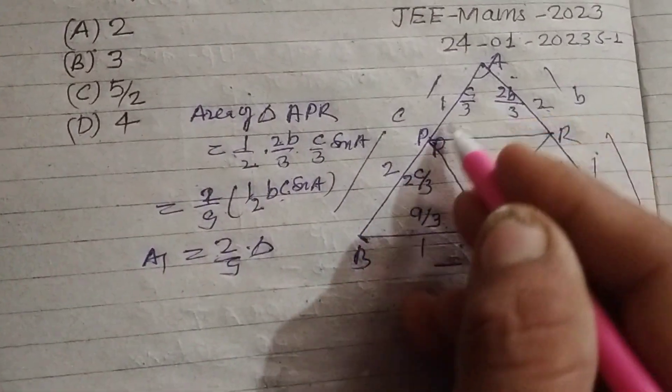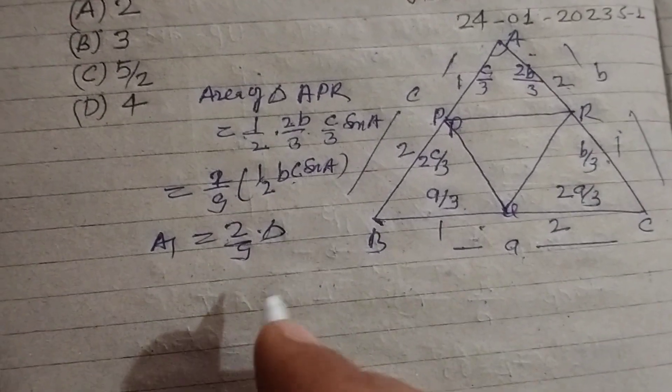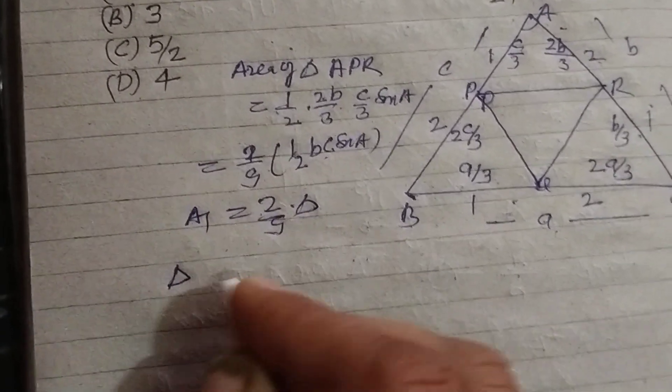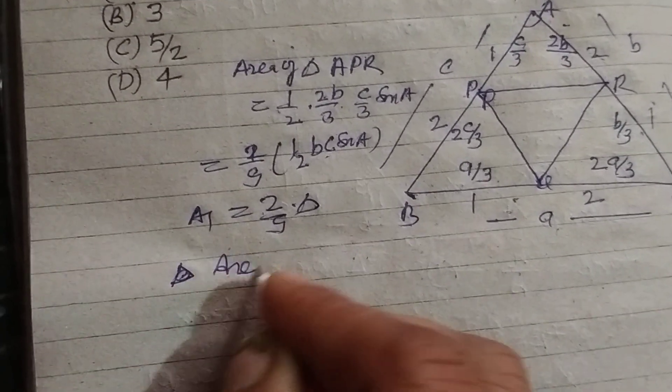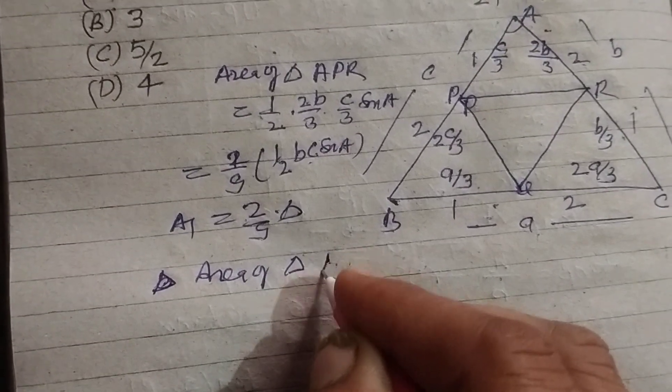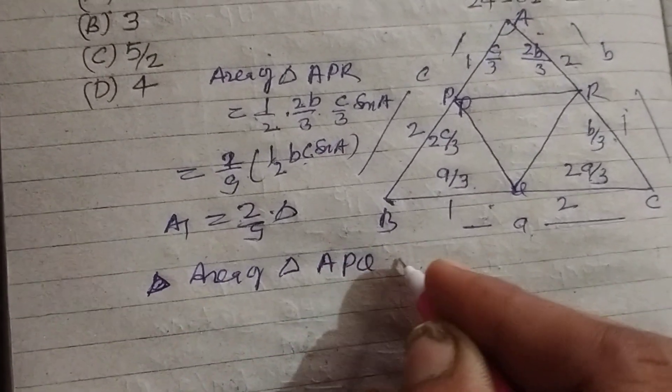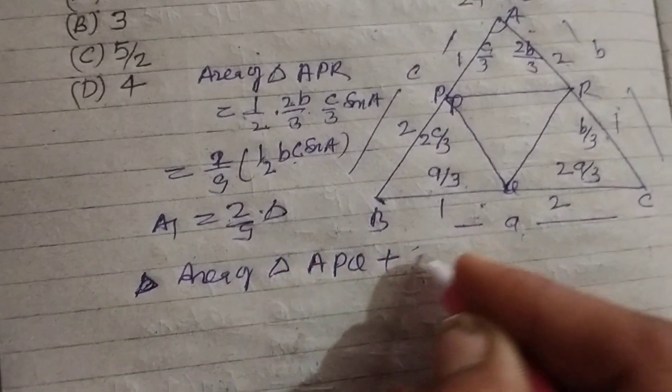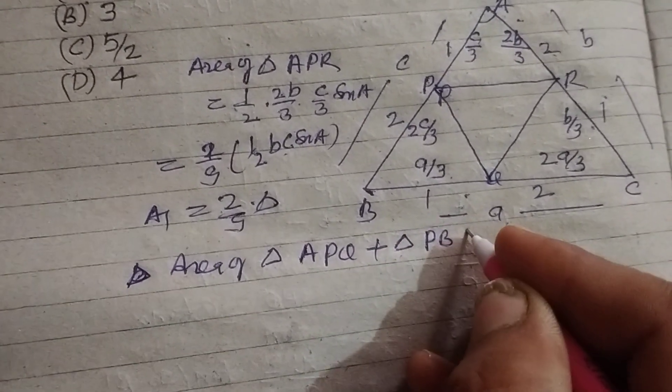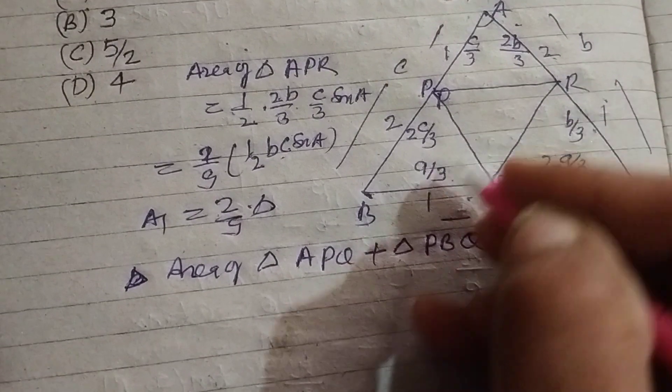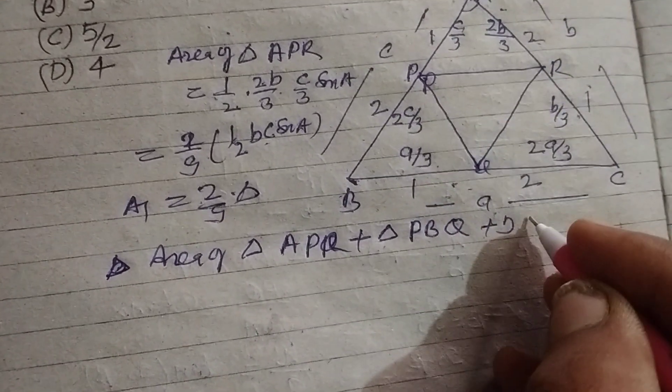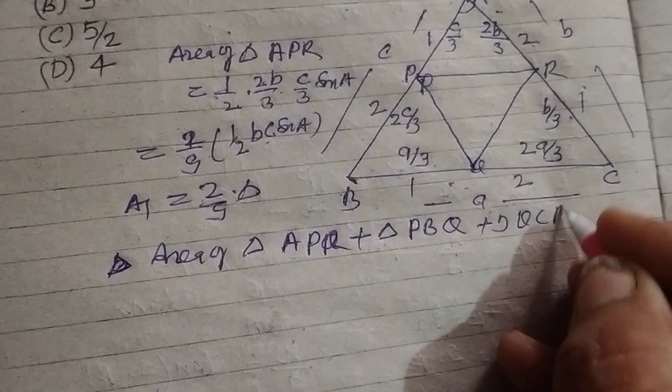Similarly, we need to find the sum of areas: triangle APR plus triangle PBQ plus triangle QCR.